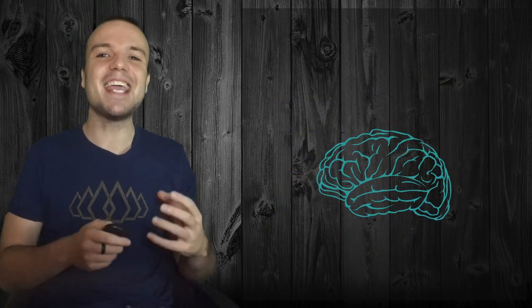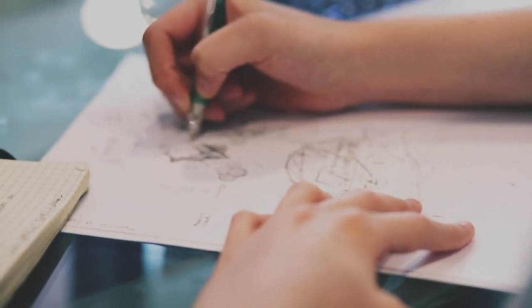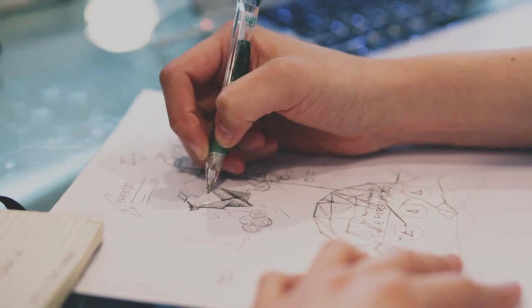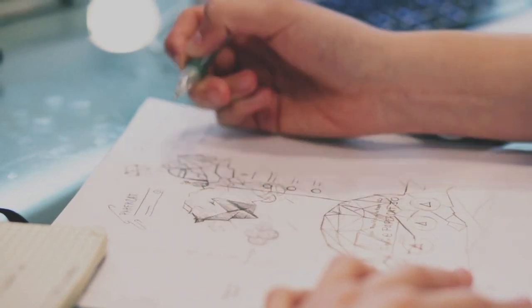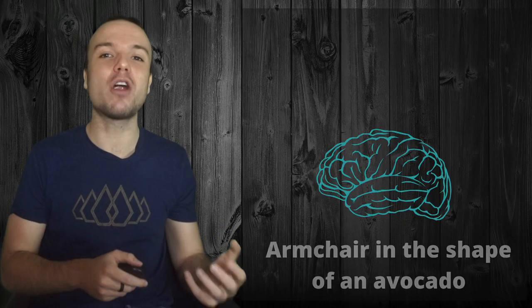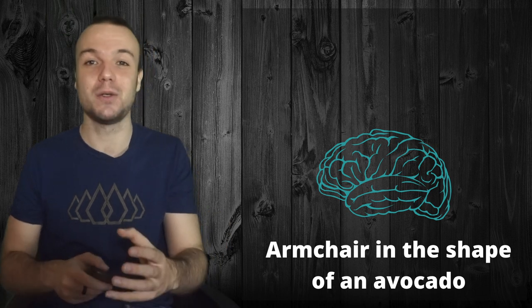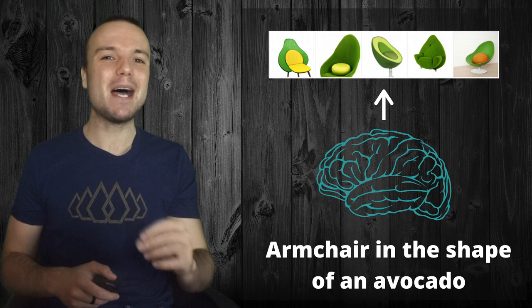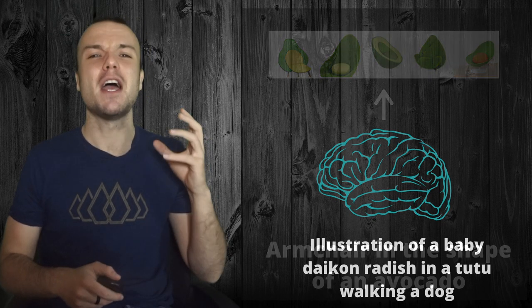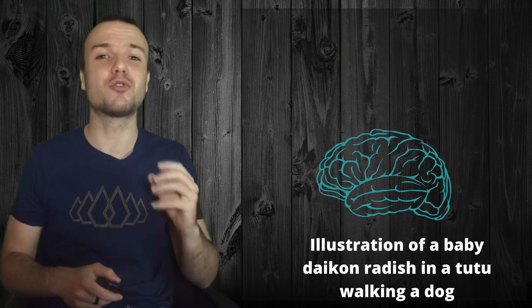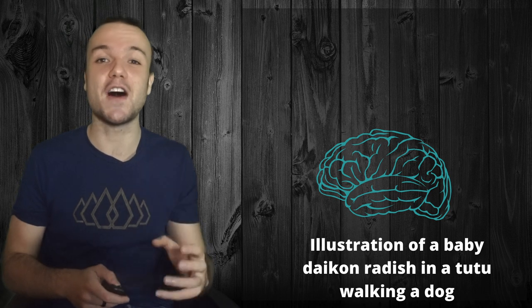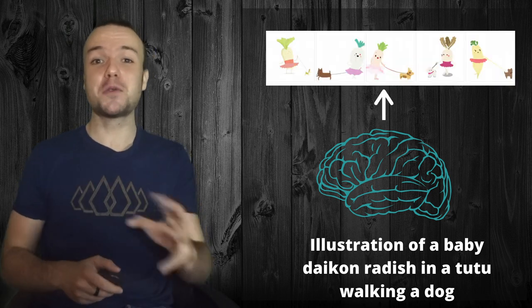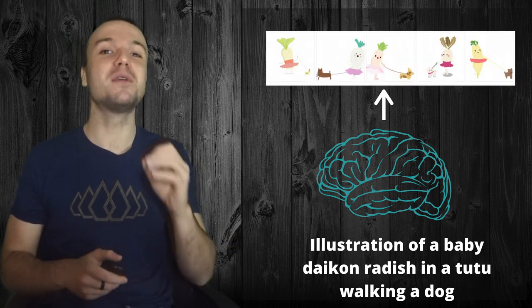Now let's move to a different technique used by AI to create art. In this case, the AI is able to create images based on a sentence or a description. For example, you could ask this AI to draw an armchair in the shape of an avocado — and this was the result. Incredible, right? What about harder things, such as an illustration of a baby daikon radish in a tutu walking a dog? And there you go — this is what the AI drew, which is unbelievable.